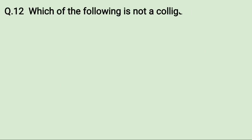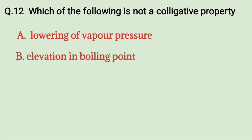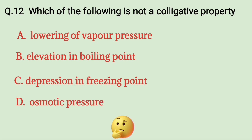Which of the following is not a colligative property? A. Lowering of vapor pressure, B. Elevation in boiling point, C. Depression in freezing point, D. Osmotic pressure. Try to solve it. The correct answer is lowering of vapor pressure.